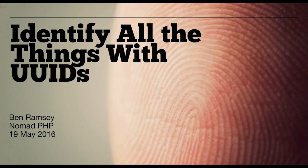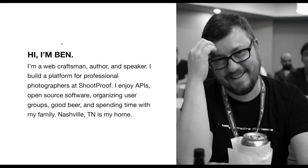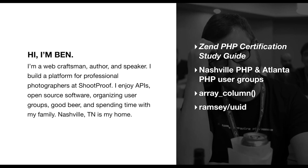My name is Ben Ramsey. I am a web developer, author, and speaker. I'm a software architect at Shootproof where I build a SaaS platform that helps professional photographers manage their studios and sell prints to their clients. I work remotely from Nashville, Tennessee, and I've been in and around the PHP community for about 13 years now. I am a co-author of the Zend PHP 5 certification study guide. I'm also one of the organizers for the National PHP User Group and I founded the Atlanta PHP User Group. I've contributed array_column to the PHP core and I am the maintainer of the Ramsey UUID library, which I'm talking about today, and the League OAuth 2 client package.